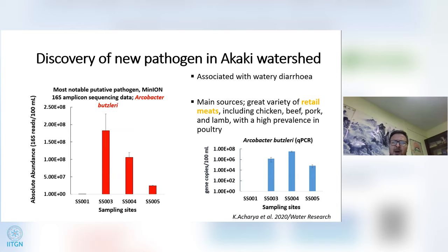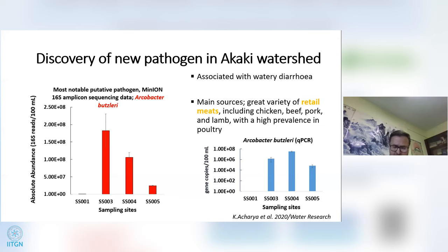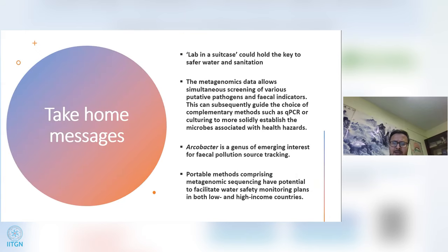NGS is a powerful screening tool, and in this case it led to the discovery of Arcobacter butleri, a significant waterborne pathogen, in this watershed. These observations from the MinION were further confirmed by qPCR analysis, which showed high abundance of the specific Arcobacter butleri genes. Arcobacter is associated with watery diarrhea and is mostly found in a variety of meats including chicken, beef, pork, and lamb, with high prevalence in poultry. In Ethiopia, people normally use raw meat as part of their diet, making high abundance of this bacteria expected.